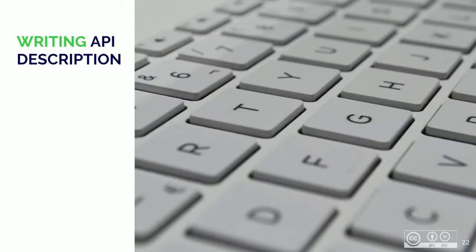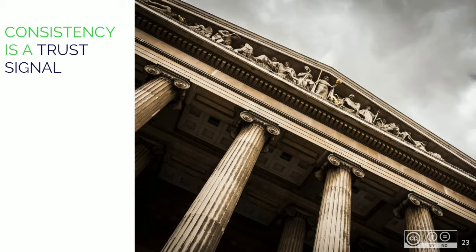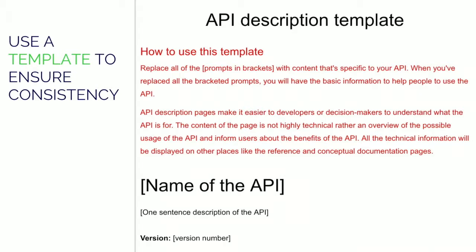We developed a method of writing such content, which I would like to present during my remaining time. First of all, it is important to keep descriptions of the various APIs consistent throughout the portal. When users meet the same structure of information while browsing these pages, they will feel comfortable, which creates trust and naturally improves the developer experience. That's why we created a template that contains all the sections we consider important about the API, and also creates an environment for technical writers and helps them keep the content consistent.